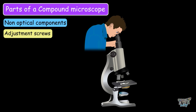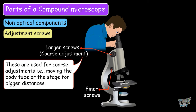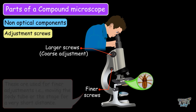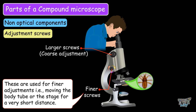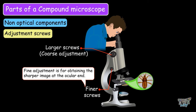There are two types of adjustment screws: larger and finer. Larger screws are used for coarse adjustments — moving the body tube or stage for bigger distances. Finer screws are used for finer adjustments, moving the body tube or stage a very short distance. Coarse adjustment brings the objective lens to the right distance from the object so that its image is formed at the ocular end, while fine adjustment is for obtaining a sharper image at the ocular end.